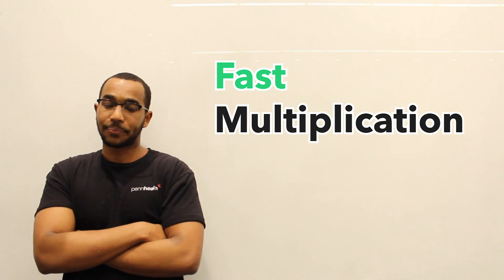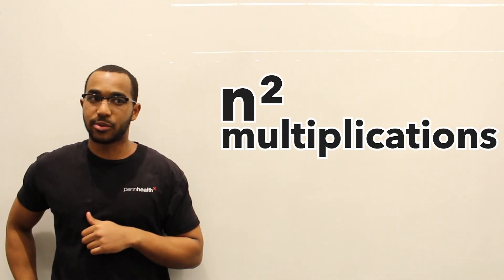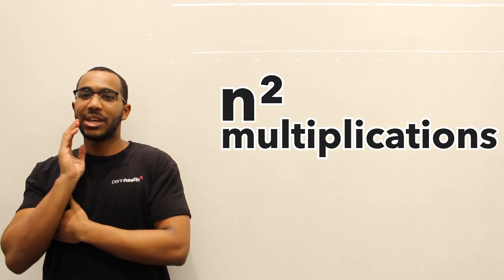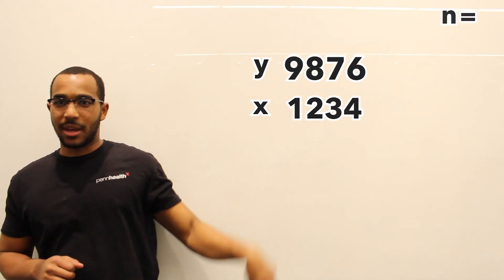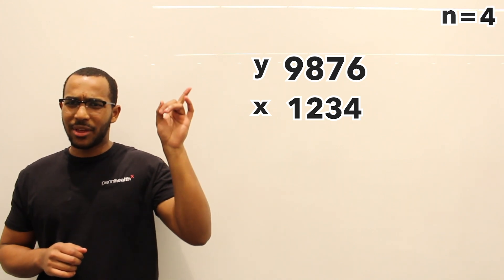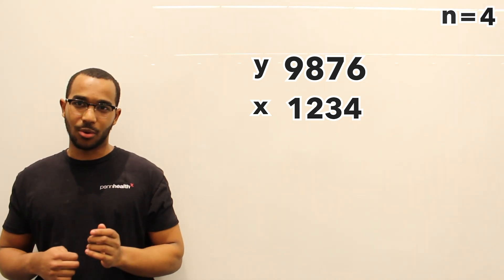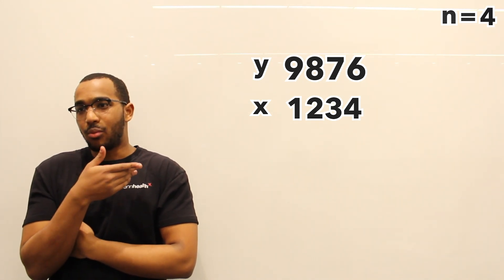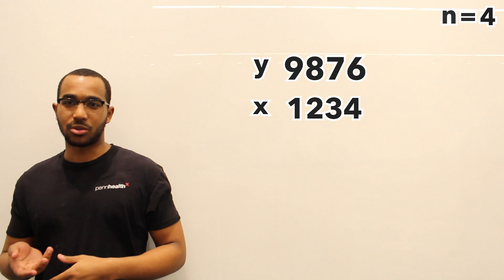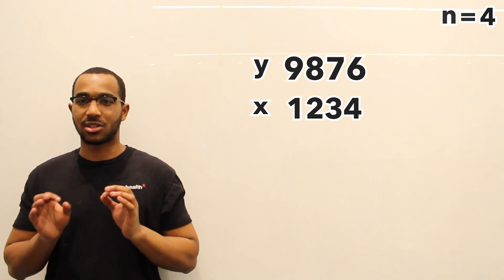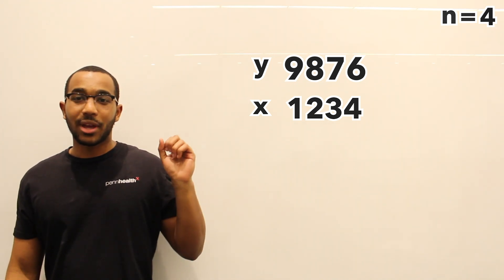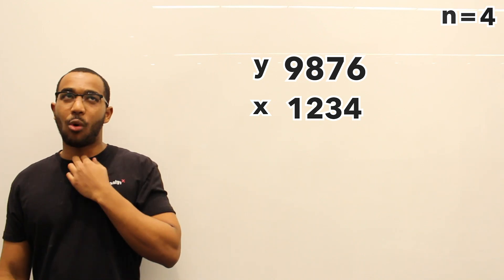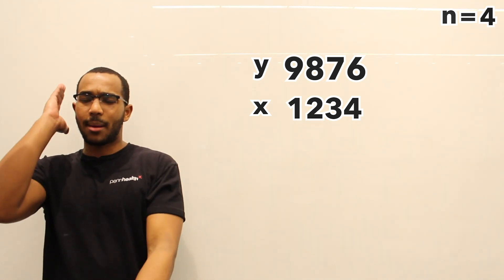How do we increase the speed of our multiplication? This is fast multiplication — it's faster than our standard algorithm. We saw that we did n squared multiplications with the grade school algorithm. Let's present our example again and look at it a different way. n equals 4 — remember that, it's very important. The approach we could take is a divide and conquer approach.